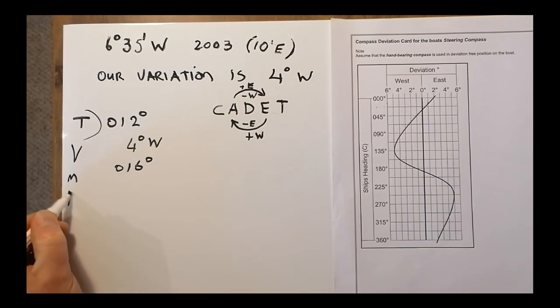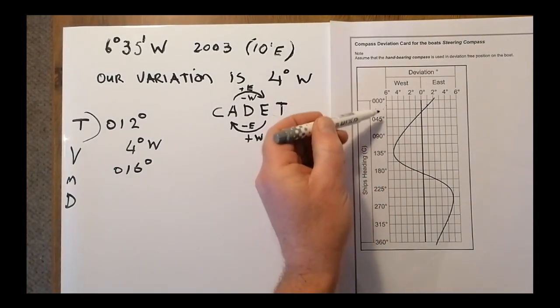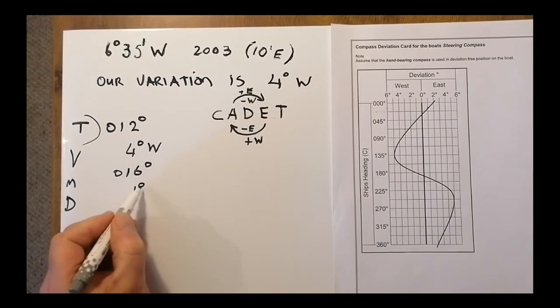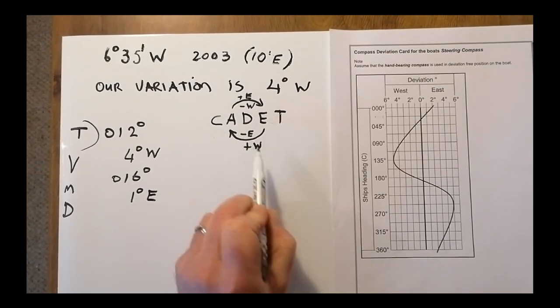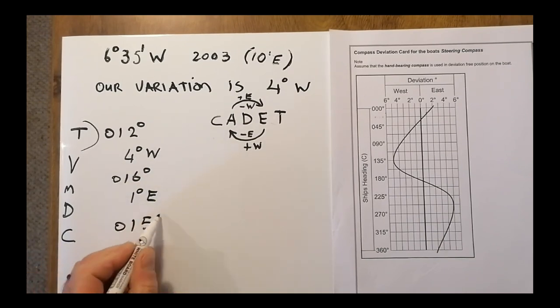Then I need to take account for my deviation. I have a look at my deviation card again. And that brings me down to one degree to the east. What does it tell me here: from true to compass, I need to subtract it. So now I have a compass heading of 015 degrees.